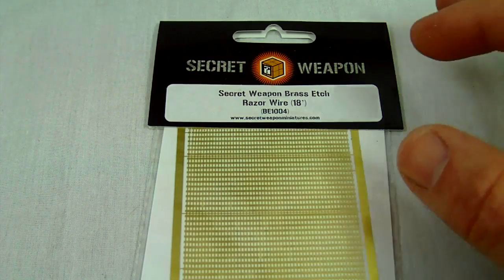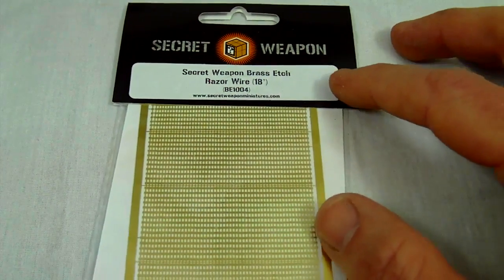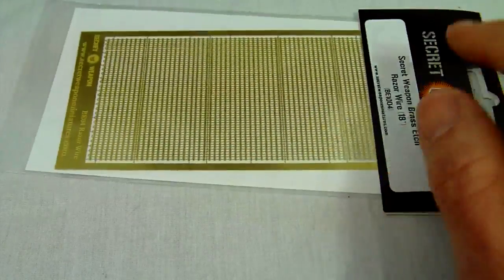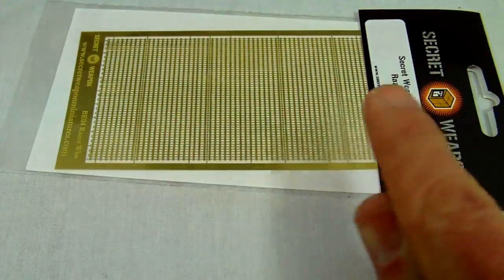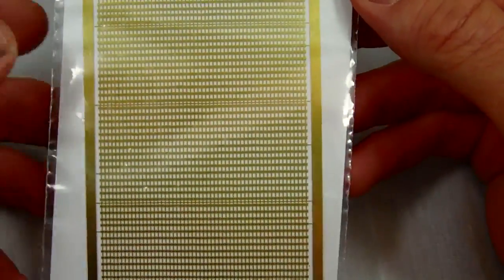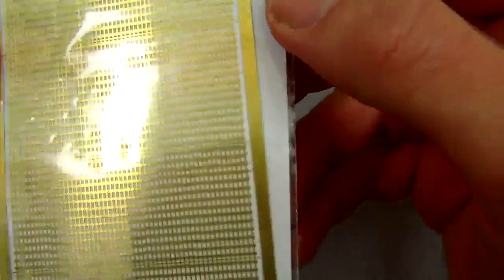So the Secret Weapon Brass Etch Razor Wire is a strand that's 18 feet long on a very thin sheet of brass that has been photo etched. They use a mask and a photoreactive chemical to dissolve sections of the brass, at least I believe that's how it's done.